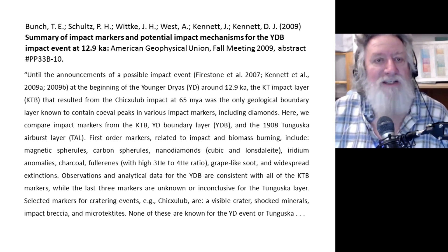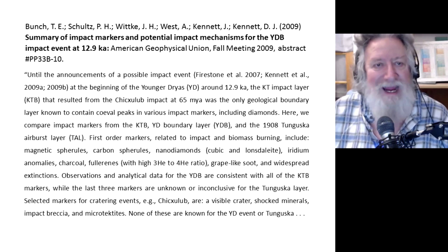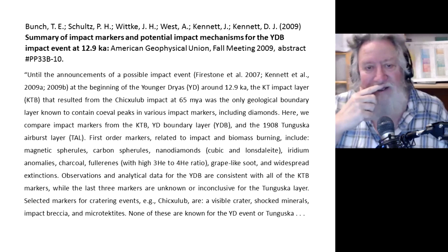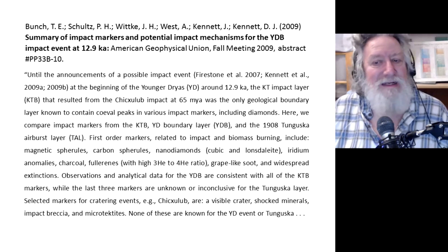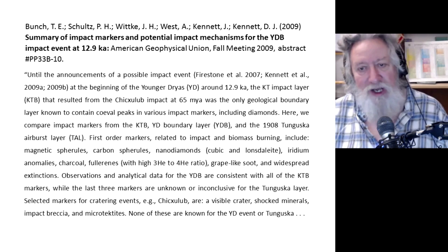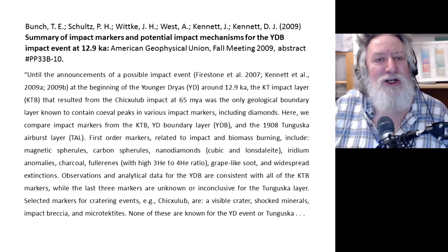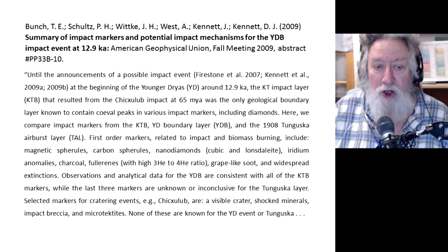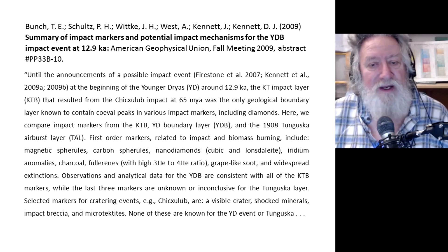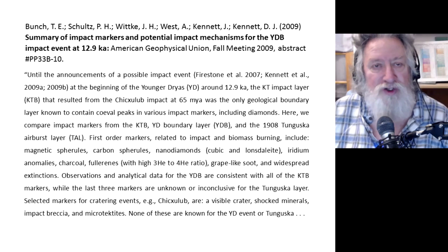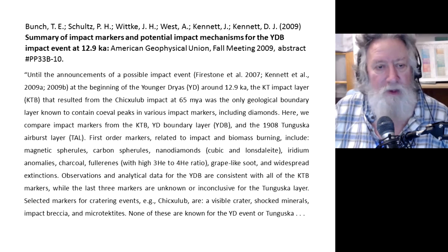Until the announcements of a possible impact event at the beginning of the Younger Dryas around 12.9 Ka — Ka meaning a thousand years, annum. The KT impact layer that resulted from the Chicxulub impact was the only geological boundary layer known to contain coeval peaks in various impact markers, including diamonds. Here, we compare impact markers from the KT boundary, the Younger Dryas boundary, and the 1908 Tunguska airburst layer.